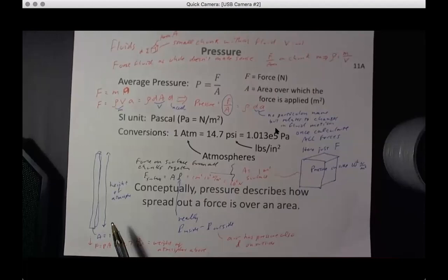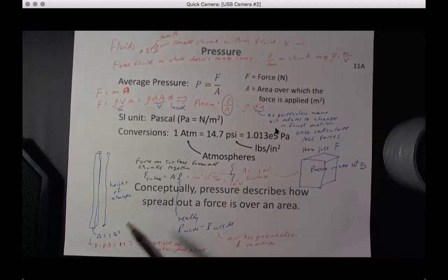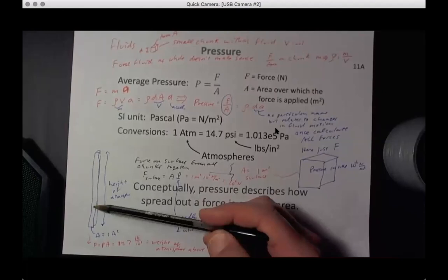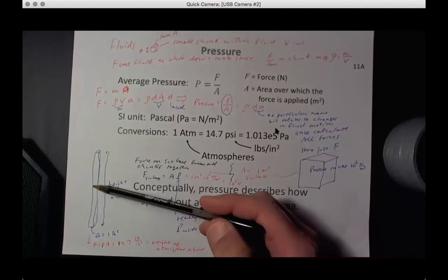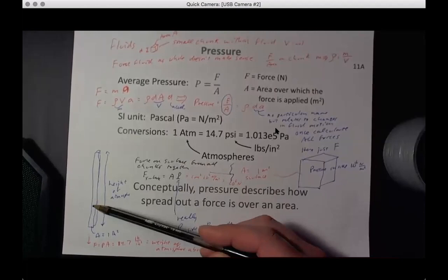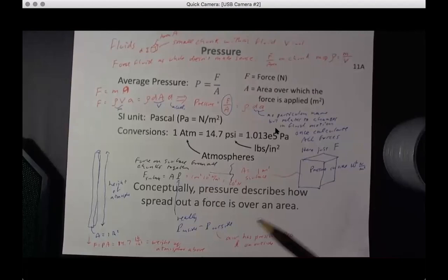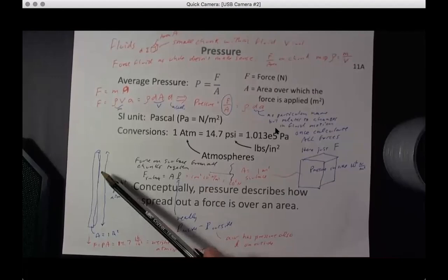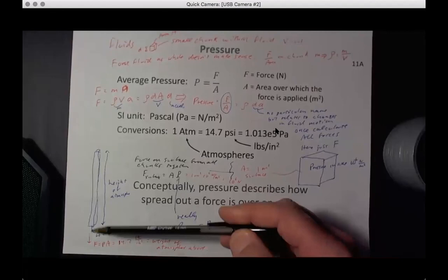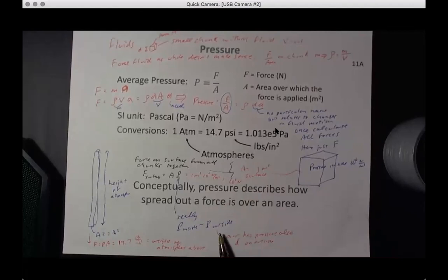Pressure decreases as you go up because there's less weight of atmosphere above you. The atmosphere's density doesn't decrease uniformly — it decreases exponentially. This happens because of thermodynamic energy considerations. Whatever weight the air column above a point has, it adds up to give atmospheric pressure at that point.